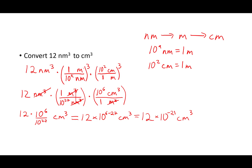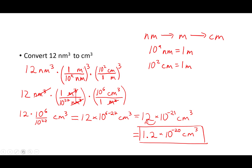Last of all, we want to write this in scientific notation. We're going to move this decimal place over 1 to do that, because we only have one digit before the decimal place. That becomes 1.2 times 10 to the — well, we moved our decimal place over 1. Since our coefficient got smaller by an order of magnitude, our power of 10 has to get larger by an order of magnitude, so we're going to add 1. It's going to be 10 to the minus 21 plus 1, which equals minus 20. So 1.2 times 10 to the minus 20 centimeters cubed. And that's our answer — it's a very small number, but 12 nanometers cubed is a very, very small amount of volume. Hope this was helpful. Bye.